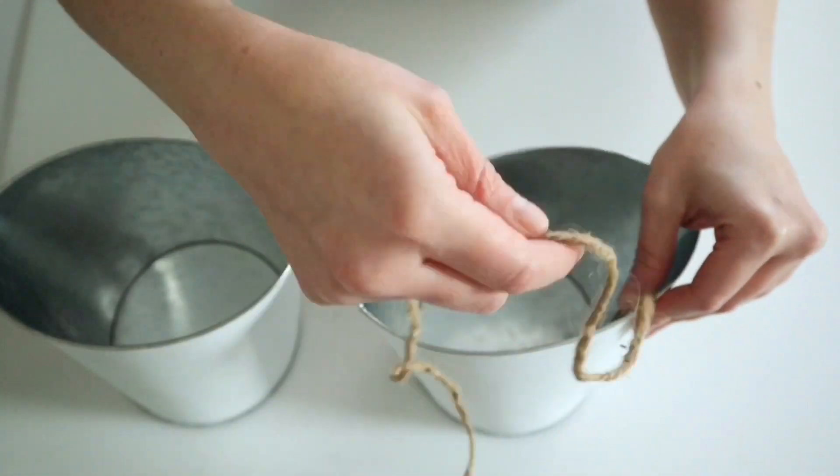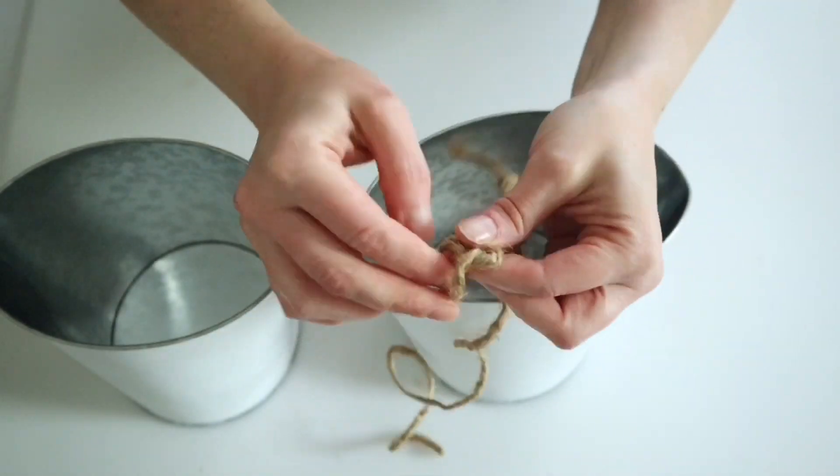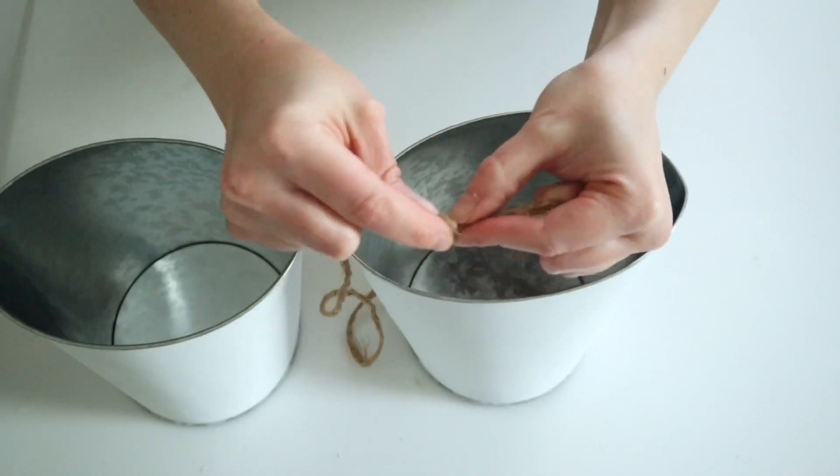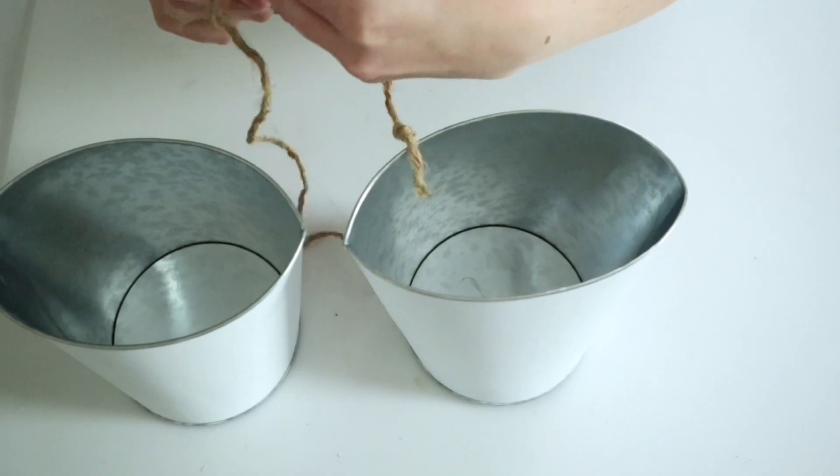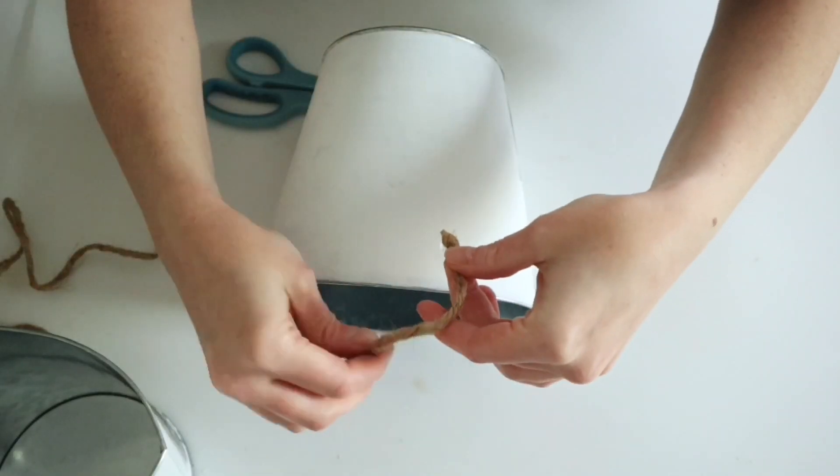Then I went ahead and tied a couple knots in two ends of a piece of rope so that I could hot glue this to the backs of my tins and I'll be able to hang these.